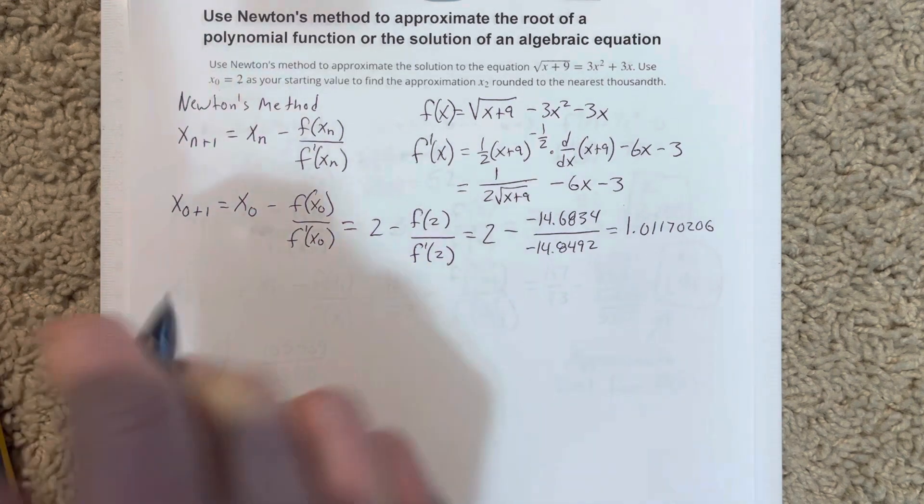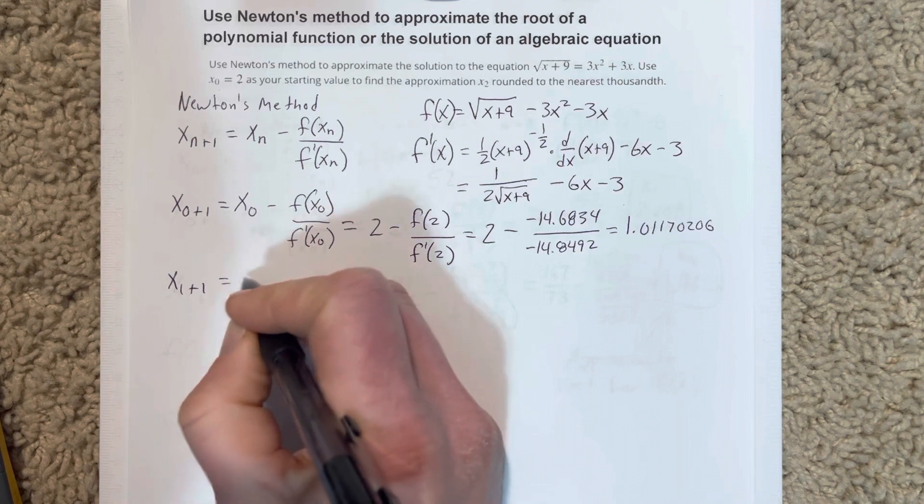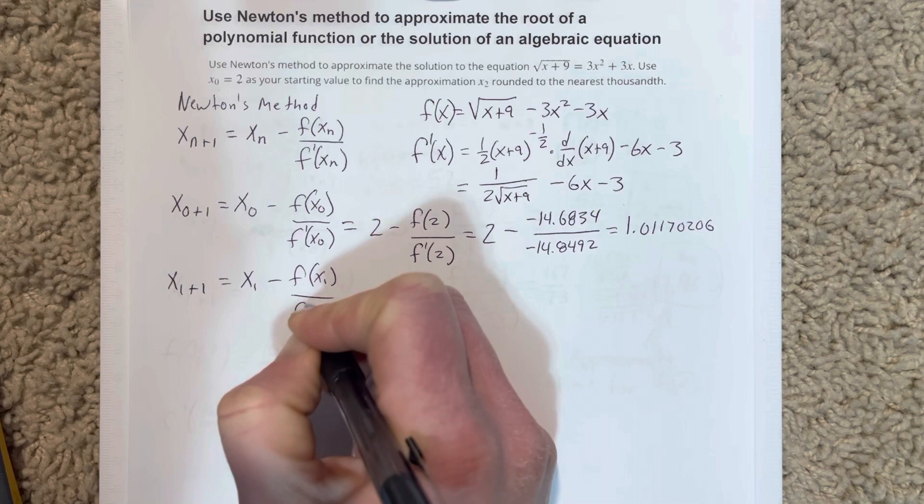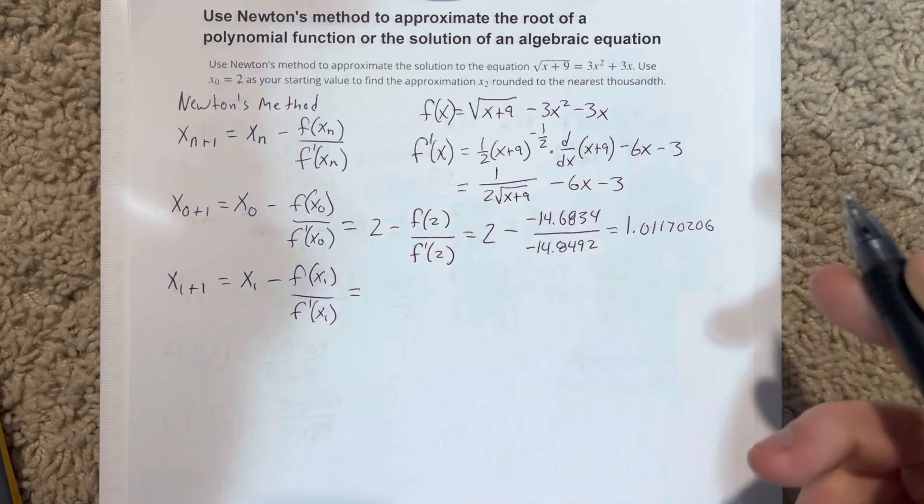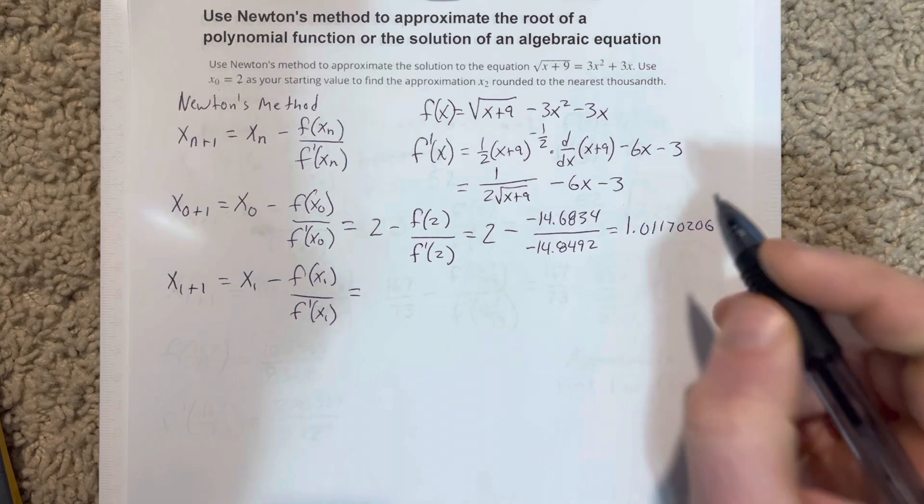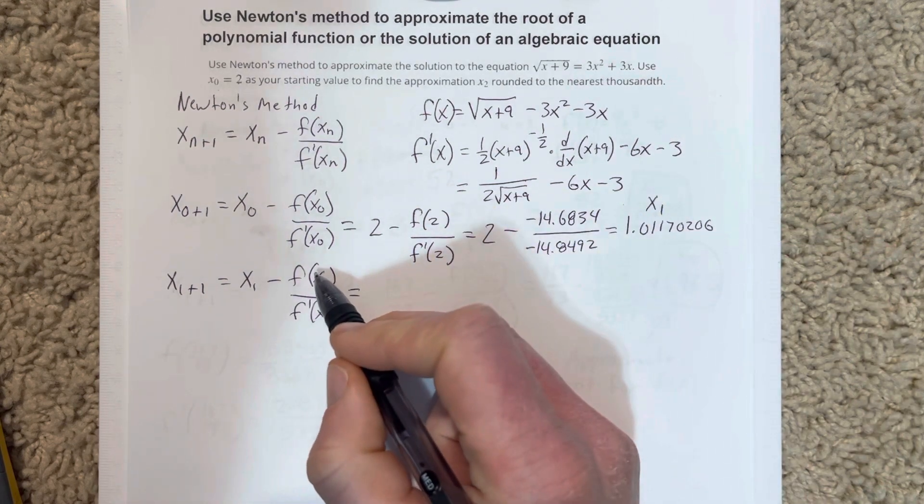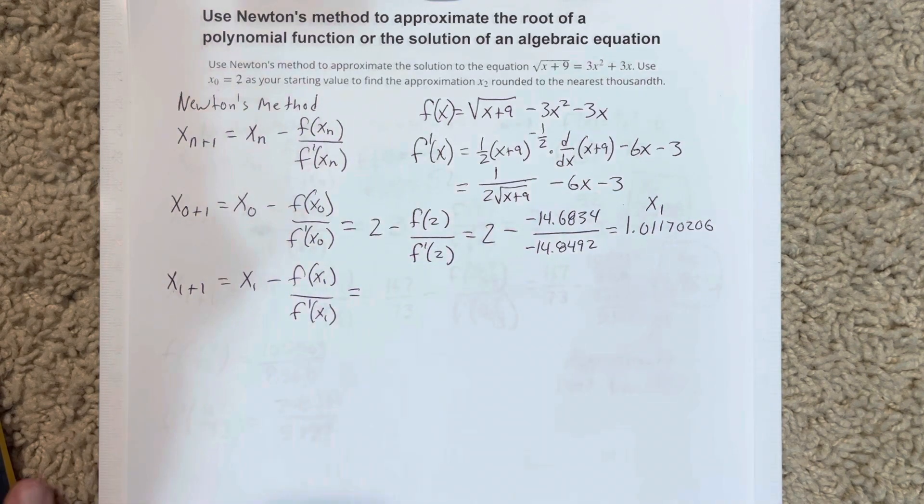Now we're going to do x1 plus 1, which would be x2 equals x1 minus f of x1 over f prime of x1. I don't feel like writing this number in here, but we know this is x1. So I'm going to substitute this in for both f and f prime and figure out what those are.